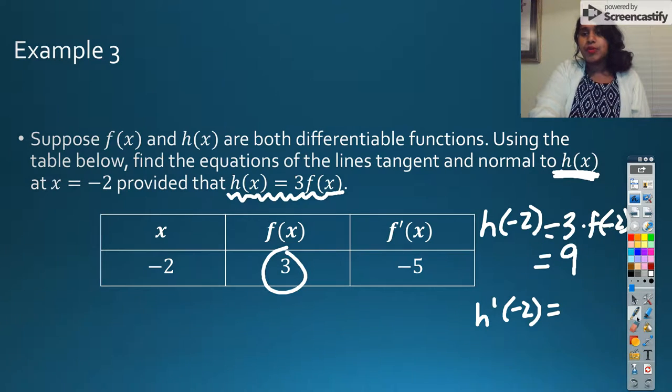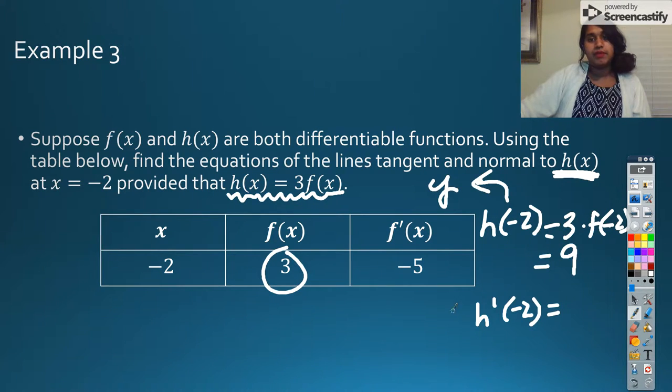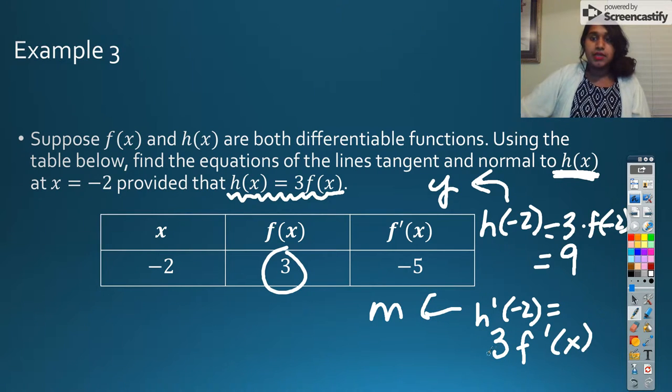Okay, welcome back. We got paused in the middle of this question, and so the very first thing we did is we figured out what h of negative 2 is, which we know is also going to be our y value. And we know this one over here is actually going to be our m. So h prime of negative 2 is going to be equal to that 3 carries down and f prime of x. Now, you have to evaluate. Am I allowed to evaluate this just the way it is because we are doing a derivative? Can I just distribute it?